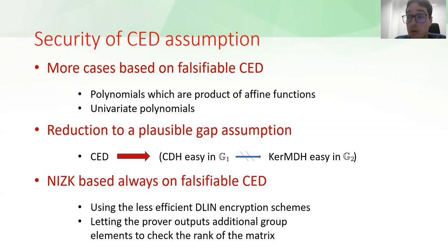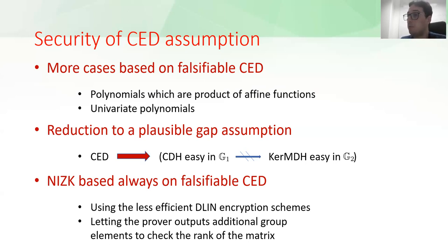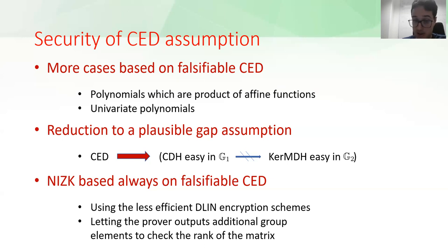Lastly, by slightly modifying our construction, we were able to design NIZKs based on falsifiable CAD for each language. Of course, this comes at the cost of efficiency. First, we have to use the less efficient DLin encryption scheme. This is because the way we rely on falsifiable CAD is by forcing the prover to output additional elements and checking that f(x) = 0 via an arithmetic circuit in group 2 that computes f(x). This means the prover must output encryptions of x in group 2, which is why we need the DLin encryption scheme.